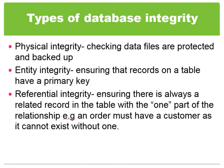The final thing we are going to come onto is something called referential integrity. This means that there is always a related record in the table with the one part of the relationship. For example, an order must always have a customer as it cannot exist without one. If the customer is deleted from the database you would need to delete the order, because the customer would no longer be there.